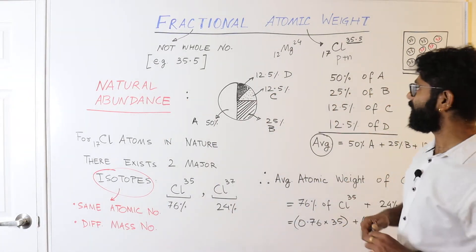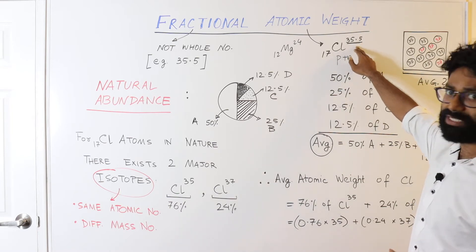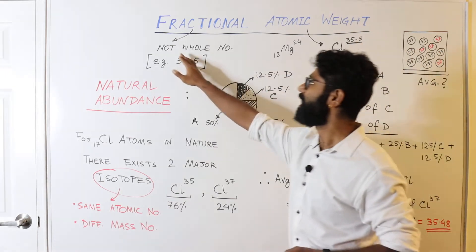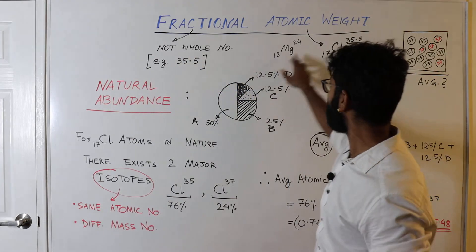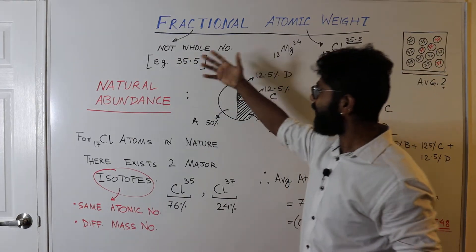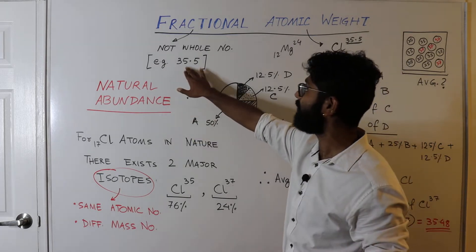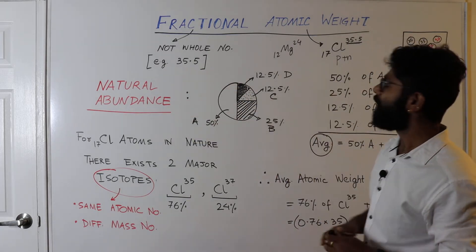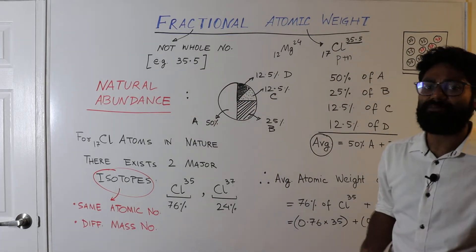Now that idea becomes a little bit tricky when fractional atomic weight comes into play. Like what do you mean by fraction? It's not a whole number, right? It's not a whole number like 24. It's like a fraction. It has a decimal, it is 35.5. Now how do you get 35.5?